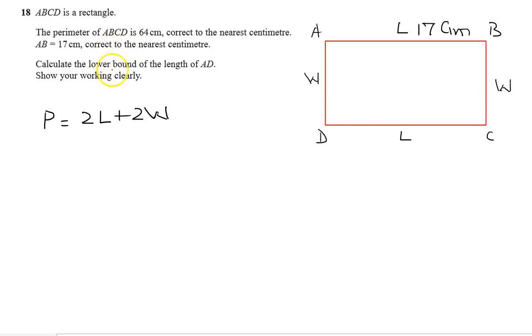Now the formula for the perimeter is 2L plus 2W. We have to find length AD, which is W. So we can write P minus 2L equals 2W. So W can be written as P minus 2L over 2.